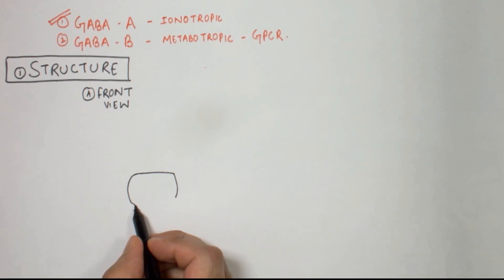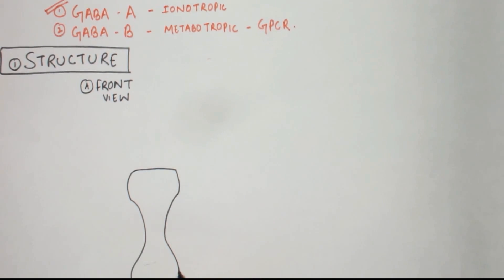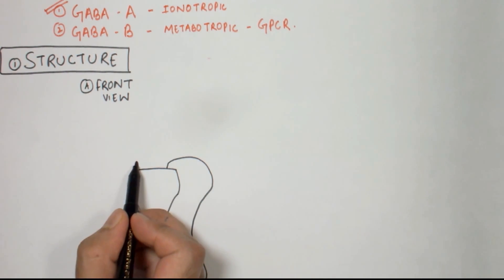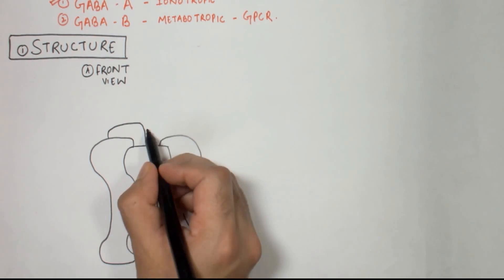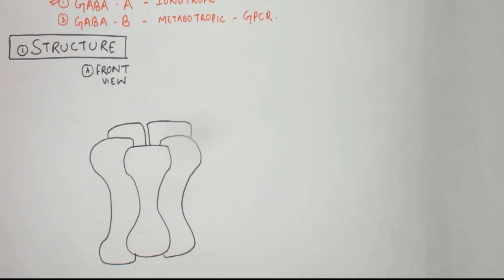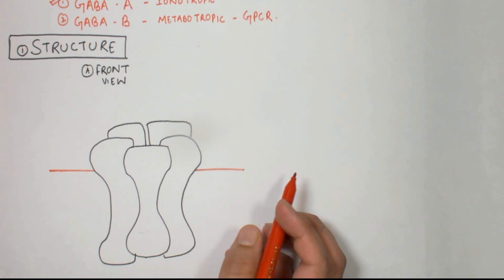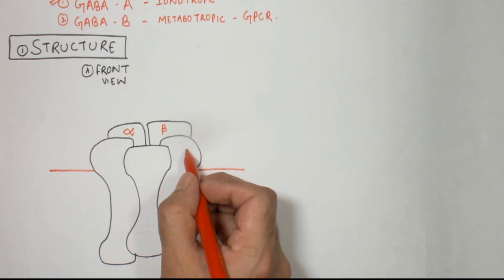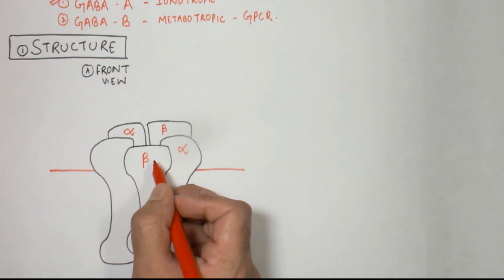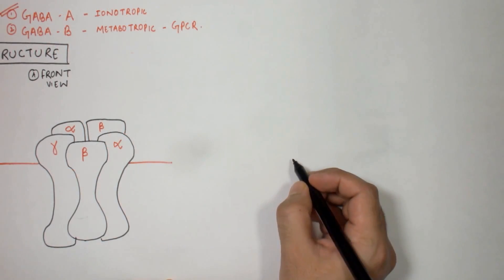Coming to the front view, the GABA-A receptor is pentameric. It consists of five subunits which are arranged partly extracellularly and partly intracellularly, and these five subunits are two alpha subunits, two beta subunits, and one gamma subunit arranged around a central pore.